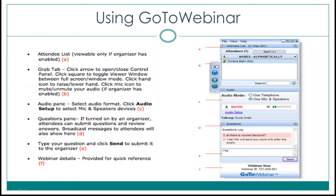All of the panes can be expanded or minimized by clicking on the plus or minus buttons at the top left of each pane. In the past we've had some audio trouble, but if you're experiencing difficulties being heard, make sure that you're not muted on your personal phone and that you've entered the audio pin provided at the beginning of the call. If that doesn't work, you can hang up, call back, and be sure to enter the audio pin.